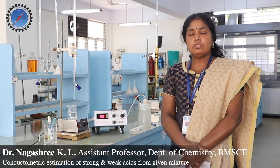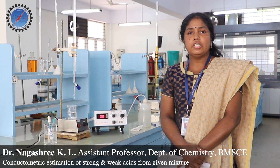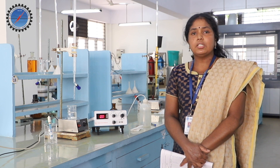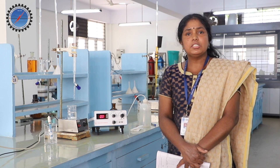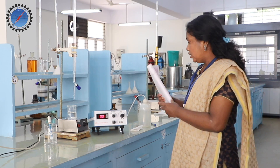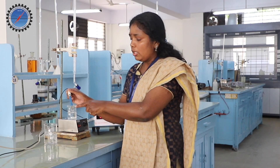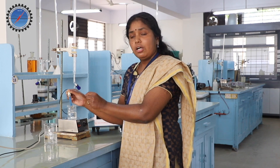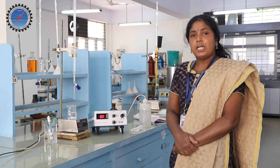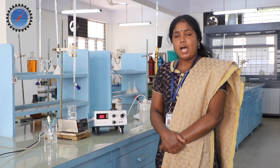The title of the experiment is Conductometric Estimation of Strong and Weak Acid in a Given Mixture. To begin with, we need to know what is meant by conductance. Conductance is nothing but the reciprocal of resistance. We are going to measure conductivity, or specific conductance, of a solution using a conductivity cell, which consists of two platinum electrodes having fixed area separated by a fixed distance. Specific conductance is measured in Siemens per centimeter.